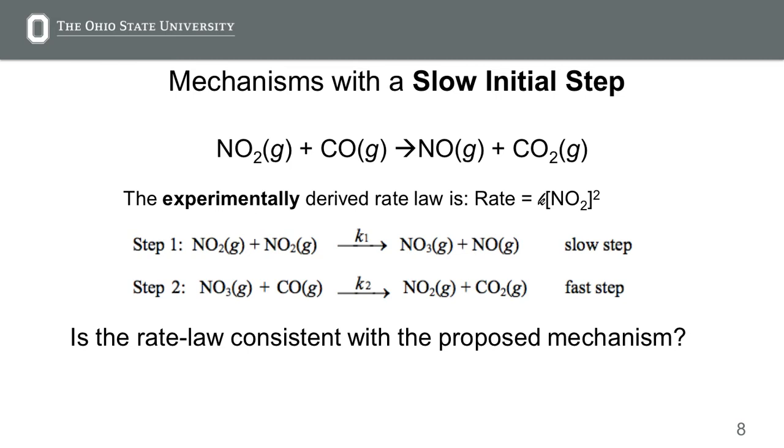Here's a proposed mechanism. We have NO2 plus NO2 reacting to form NO3 plus NO. Someone would have had to figure out there were these intermediates or products formed. Then we have NO3 plus CO forming NO2 and CO2. And you'll notice that we've written slow step after step 1 and fast step after step 2.